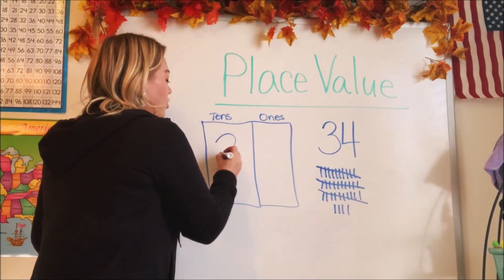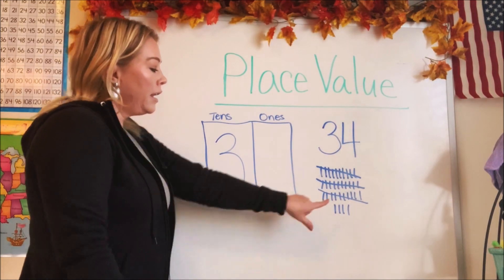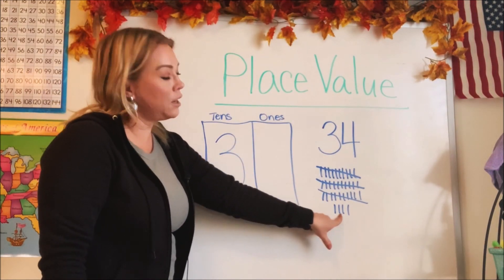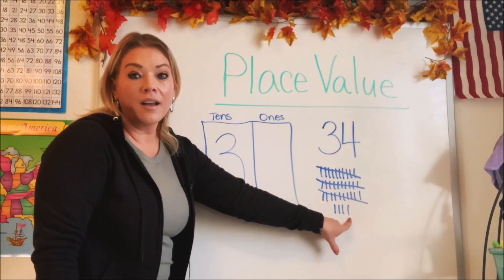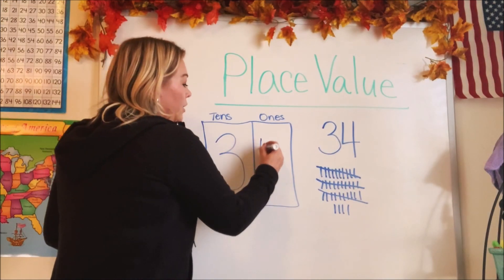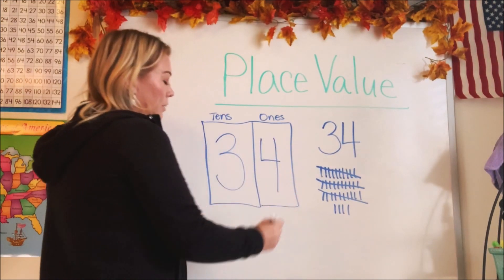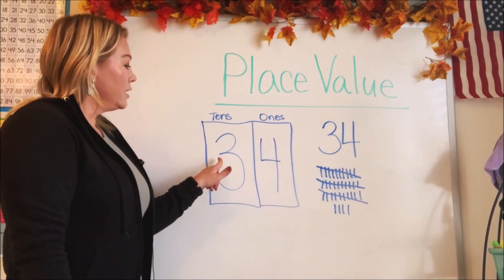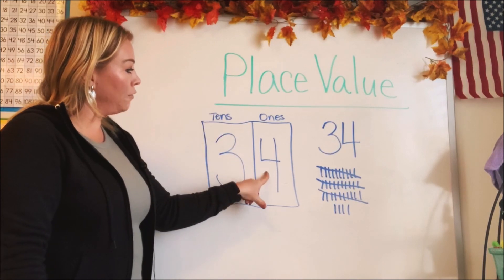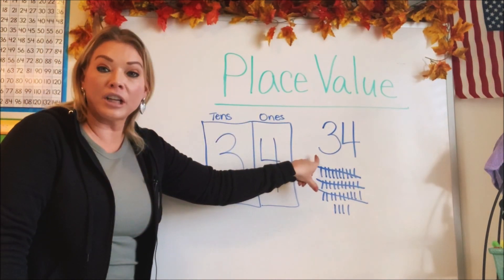So how many groups of 10 were in the number 34? It was three. And how many little ones are left over? Four — so we put that in the ones place. Three tens and four ones — that's 34.